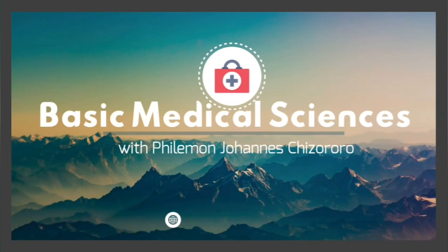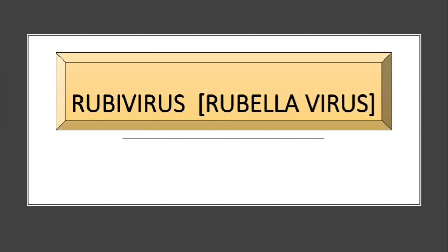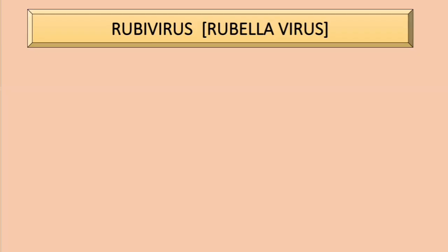Welcome back. In this video we are going to talk about the Rubella virus. In the previous video we discussed the togaviruses, and the Rubella virus is one of them. You can click the link in the top right corner to find the introduction to the Togaviridae family and the arboviruses that belong to that family. The Rubella virus belongs to the Togaviridae family — it's a positive-sense, single-stranded RNA virus.